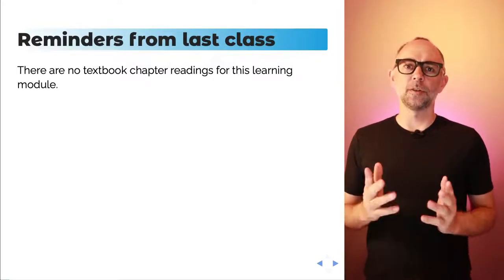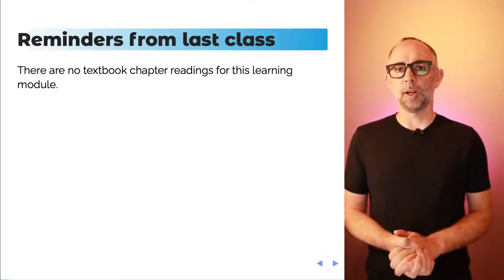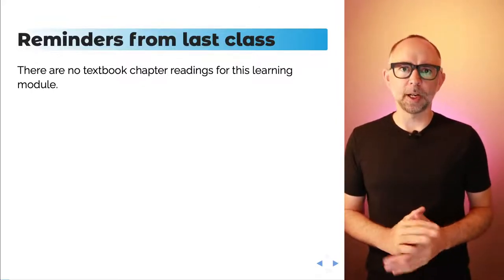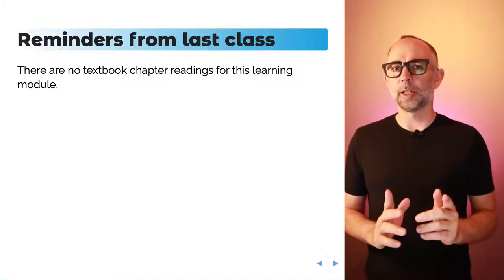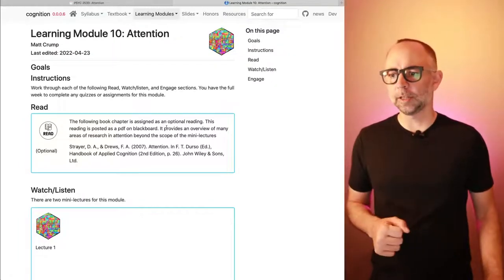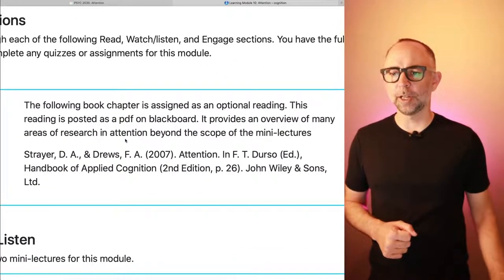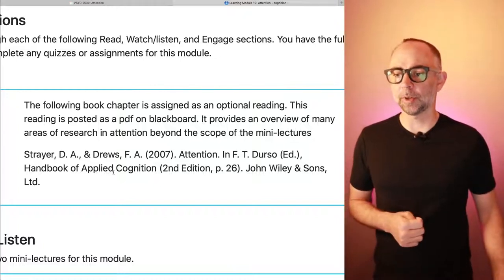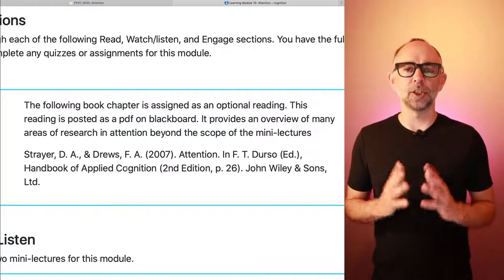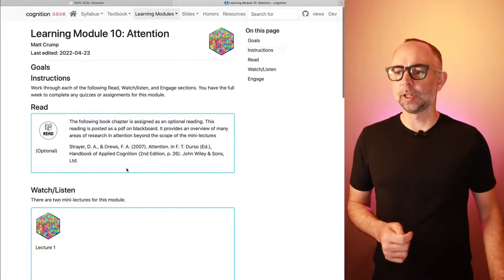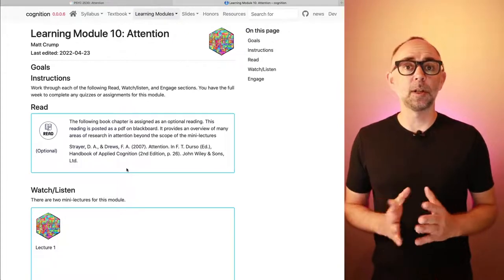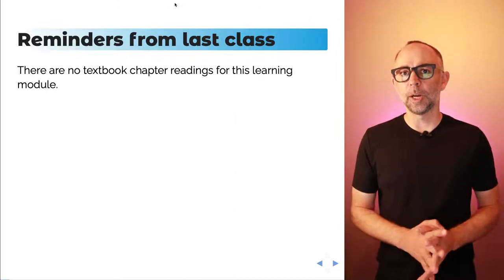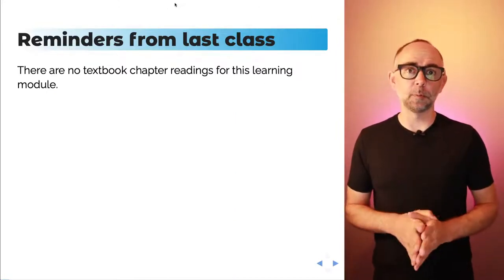Just as a reminder, there are no textbook chapter readings for this module. We have run out of textbook chapters. There is an optional reading that I've assigned. You can find it on Blackboard. It's by Strayer and Drews, called Attention, and it's a chapter from the Handbook of Applied Cognition. It provides a really nice general overview of the field of attention.